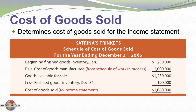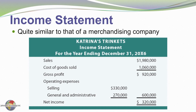Now let's see how we calculate cost of goods sold for Katrina's Trinkets. We have the beginning finished goods inventory, to which we add the $1,000,000 cost of goods manufactured, giving us goods available for sale of $1,250,000. Subtracting an assumed $190,000 of ending inventory gives us the cost of goods sold, which is transferred to the income statement. On the income statement, sales minus the $1,000,000 cost of goods sold yields gross profit, from which we subtract selling, general, and administrative costs to arrive at net income.